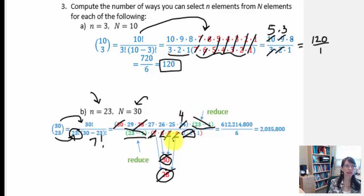So everything that I didn't cross out is my final answer. I could take 29 times 27 times 26 times 25 times 4. And I should end up with 2,035,800.